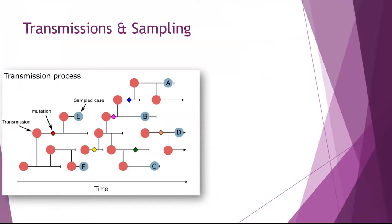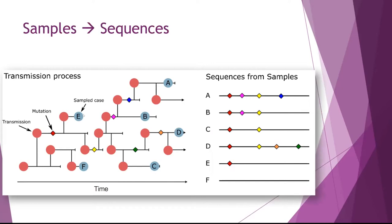As this virus moves through the population, some people will be sampled, and from these samples we can extract the genetic material of the virus. When we do that, we get these genomes, and we can see the mutations that accumulated as the virus was transmitting through the population. We can use them to group sequences — sequences that share more of the same mutations are more similar and more closely related in the transmission chain. Viruses with fewer shared mutations are further apart in their relationship.